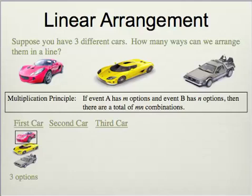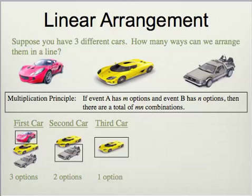You have to choose one, so say you choose the red car, which leaves only two cars for the second position — the yellow or the gray. Going with the DeLorean for the second car leaves only one car for the last position. So it's not that there are just three options; you have three, then two, then one. For every one you choose, the next one in line goes down by one. Using our multiplication principle, that's three times two times one, which is three factorial. Your factorial is what allows you to make your linear arrangements.